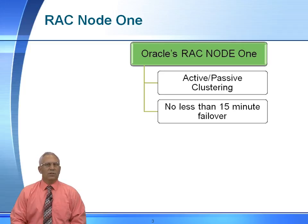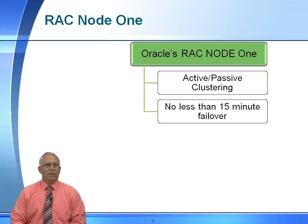What Oracle will tell you is there's no more than a 15-minute failover. The advantages of RAC 1 Node are basically for those people that do not require 100% 24 by 7. In the event of a node failure, they could suspend processing for 15-some-odd minutes and then transfer processing over to the surviving node.